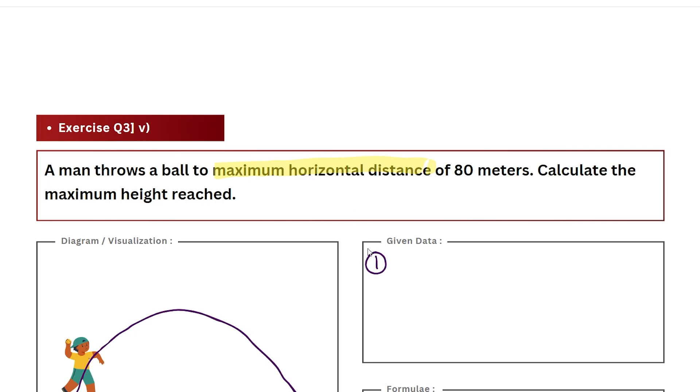The horizontal distance in projectile motion we call it as range, and we represent it using the letter R. But as I said, this is a maximum horizontal distance so I'm going to denote it with a special symbol R_max and this value is given as 80 meters.